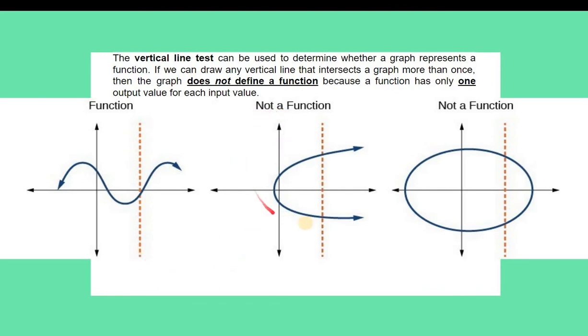On our second graph, if you would notice, it says here that this is not a function. So why? Because if it intersects a graph more than once, it is not a function.